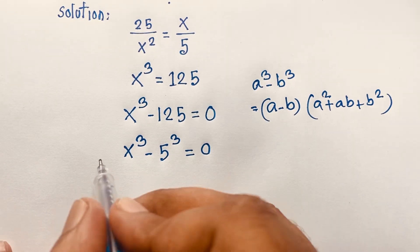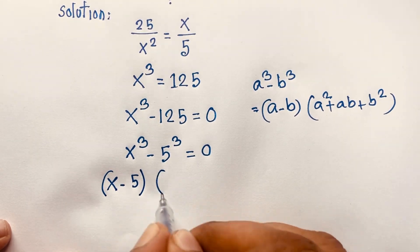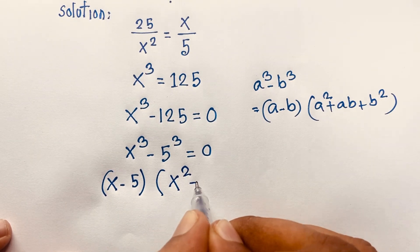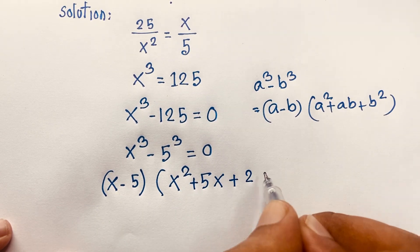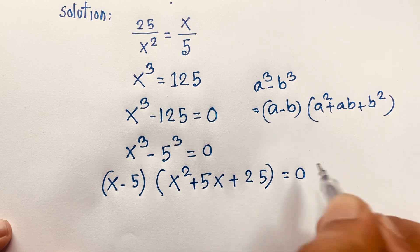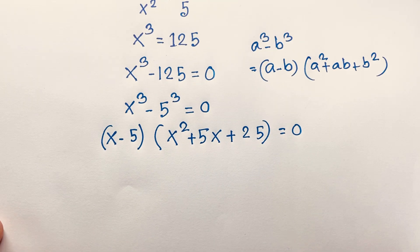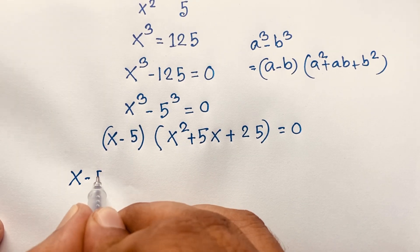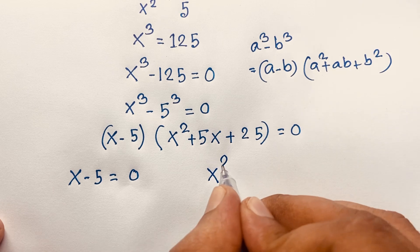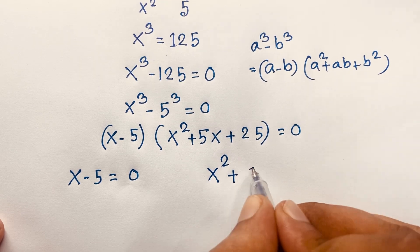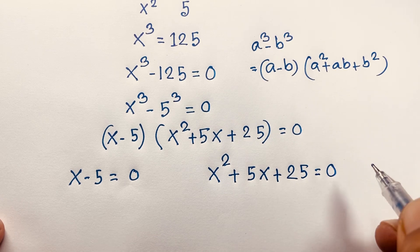Applying the formula, the expression becomes: x minus 5 times x squared plus 5x plus 25, all equal to 0. This gives us two cases. First case: x minus 5 equals 0. Second case: the quadratic equation x squared plus 5x plus 25 equals 0.